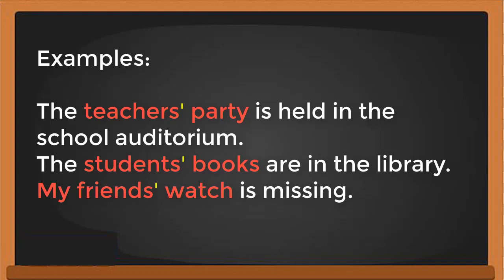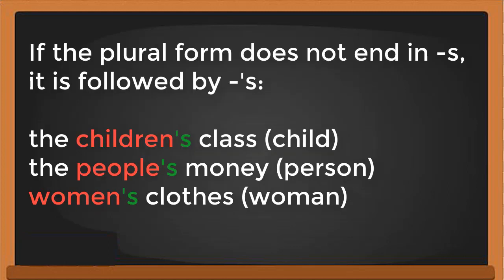If the plural form does not end in -s, it is followed by apostrophe-s. For example: 'the children's class' — children is the plural of child and doesn't end in -s, so you add apostrophe-s. 'The people's money' — people is the plural of person, so you add apostrophe-s.